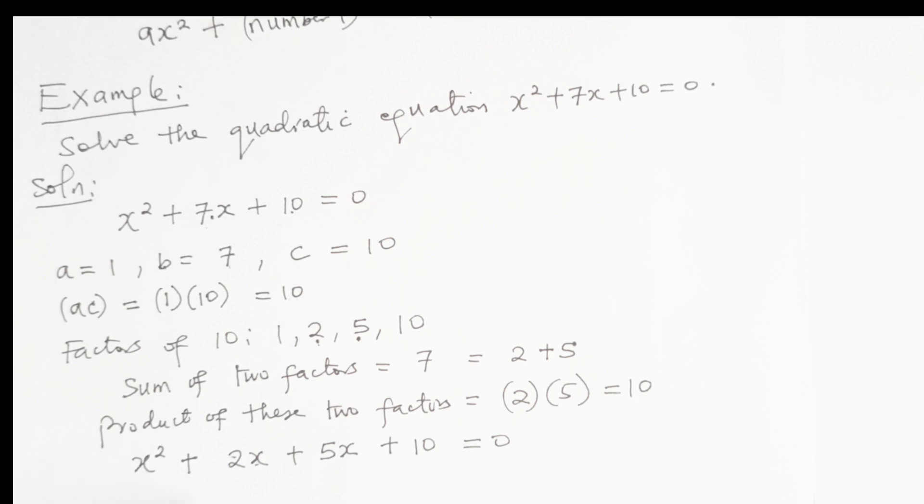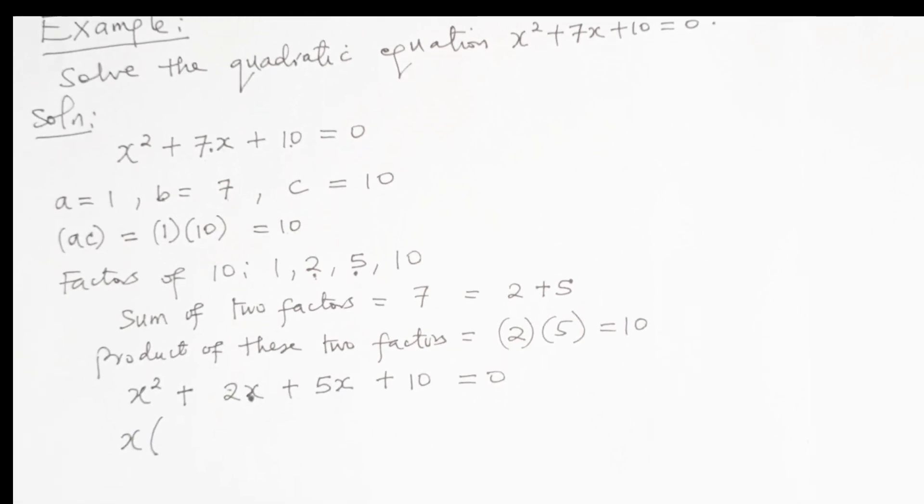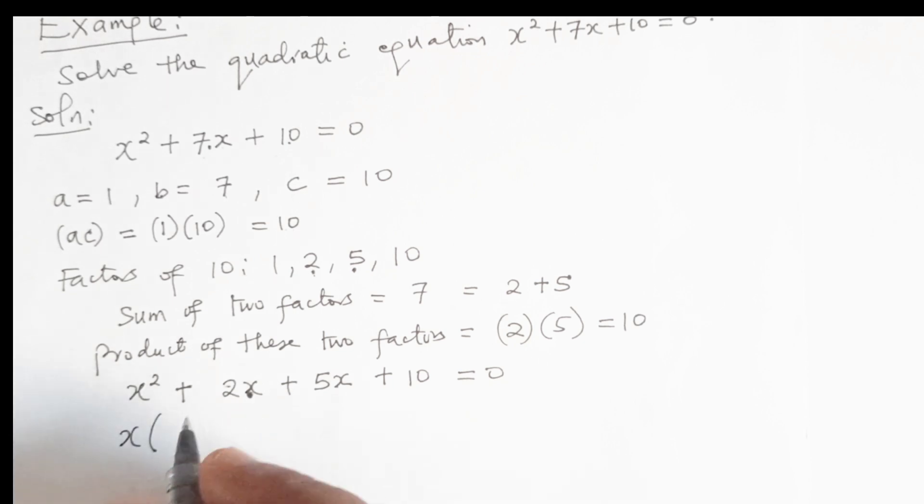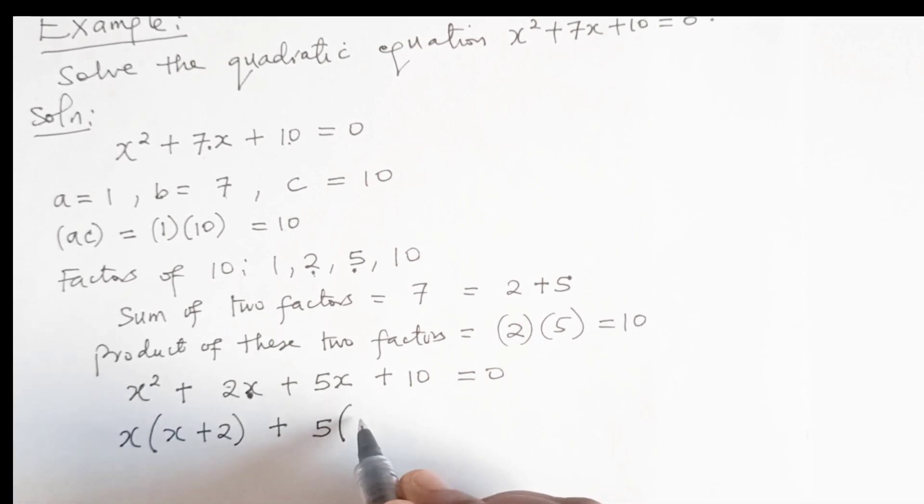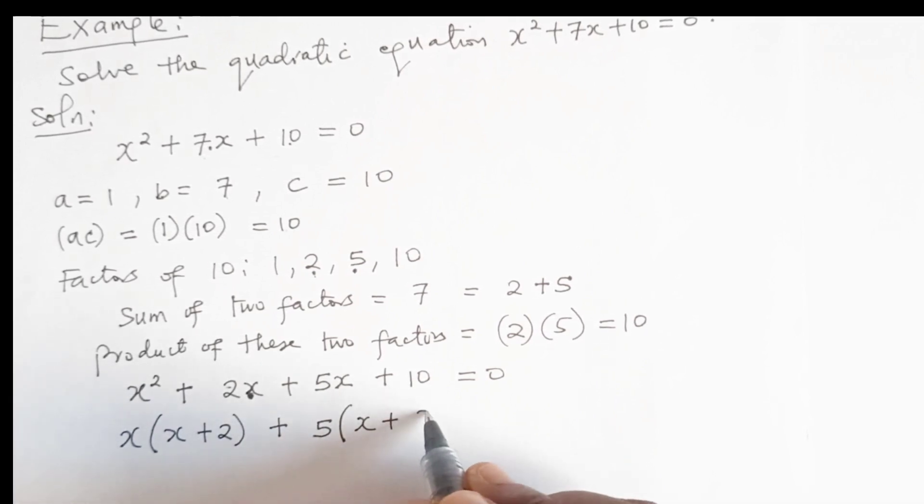I'm going to take out the common terms and then we simplify. The common terms here, between x squared and 2x, the common term is x. And between 5x and 10, the common term is 5. So I will write it as x into x plus 2, plus 5 into x plus 2, equal to 0.